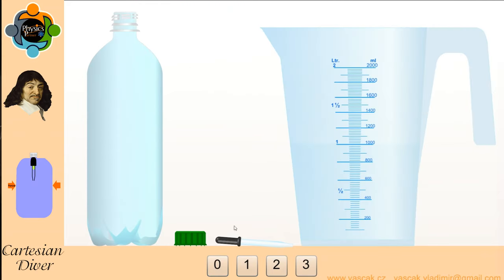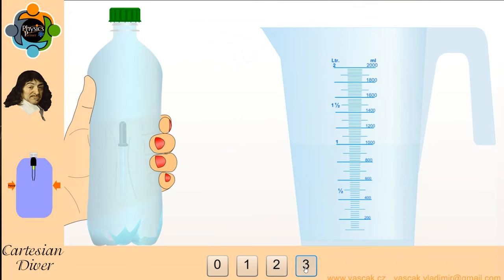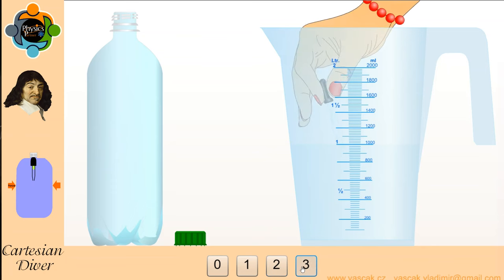The eyedropper will act as our diver and the water will act as our fluid. Watch closely as we demonstrate the fascinating behavior of the Cartesian diver. As I apply pressure, the air inside the eyedropper compresses, causing it to become denser than the surrounding water.